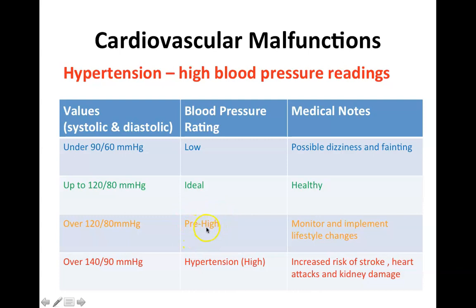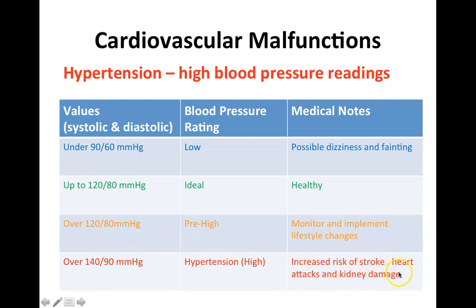Pre-high blood pressure doesn't mean you have hypertension; it means you're in the realm where you could potentially develop it. Therefore, doctors will monitor you and start to implement lifestyle changes. If you are over 140 systolic and 90 diastolic, you have hypertension, which increases the risk of stroke, heart attacks, and kidney damage — risk factors we'll go through later.